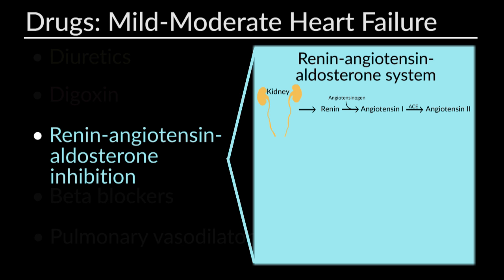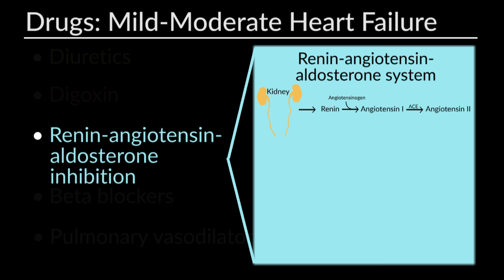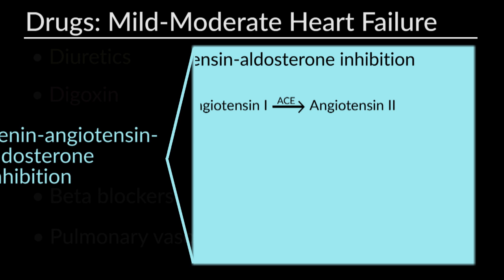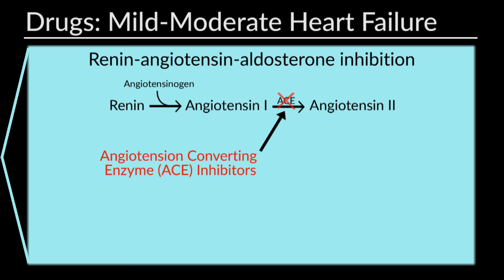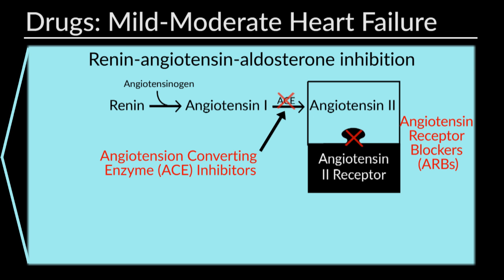The renin-angiotensin-aldosterone system is very active in heart failure, leading to increased sympathetic tone that is compensatory for low cardiac output in the short term but becomes maladaptive over time, resulting in tachycardia, fluid retention, and hypertension. Target medications inhibiting this system include angiotensin-converting enzyme inhibitors — ACE inhibitors — and angiotensin receptor blockers, or ARBs.